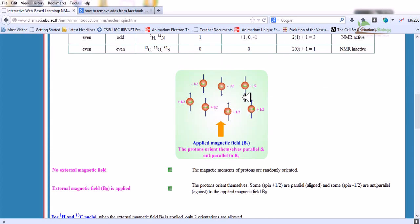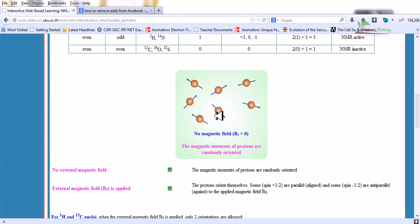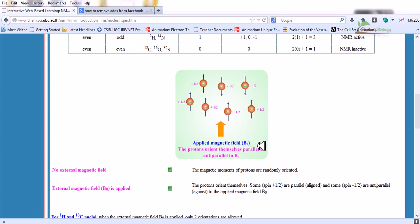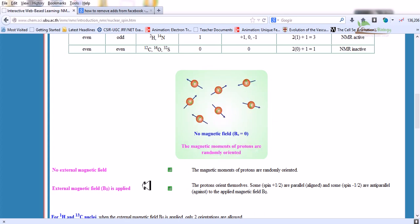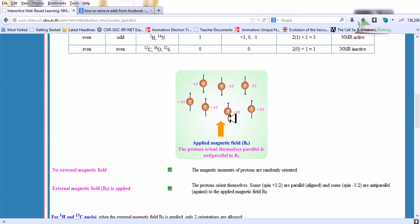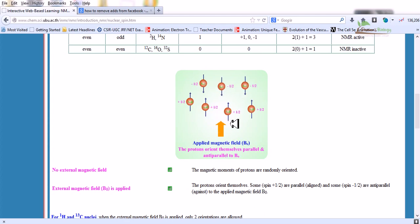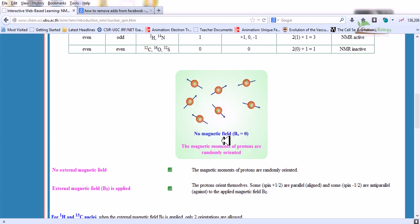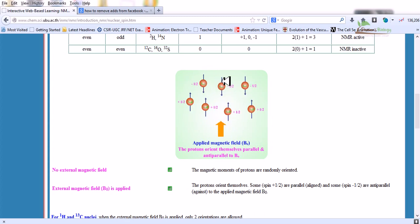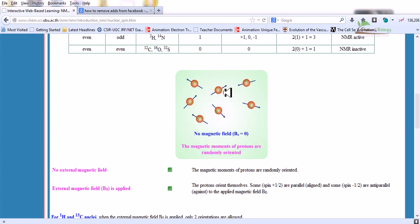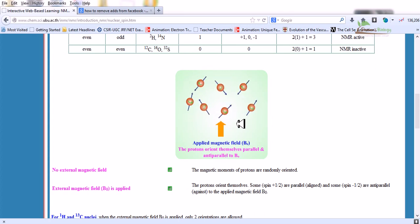Here you can see in this picture, if there is no external field, B0 equals 0, the magnetic moment protons are randomly oriented. If the external magnetic field is applied, the protons orient themselves depending upon the spin. It can be plus half or parallel, and some can be minus half which are anti-parallel. That means some are against the applied magnetic field orientation. Those which are placed anti-parallel are called minus half spin and those which are placed in a parallel direction have plus half spin.